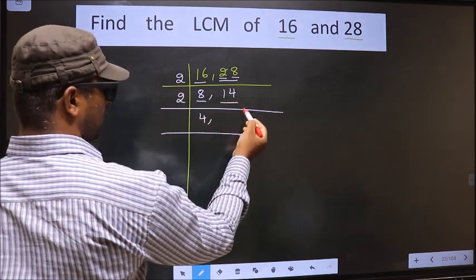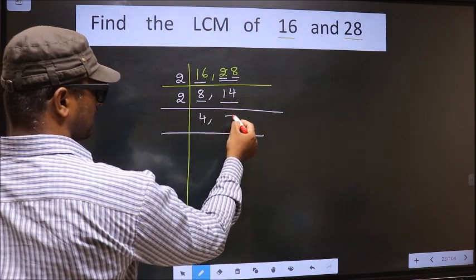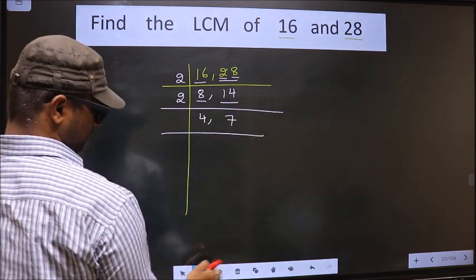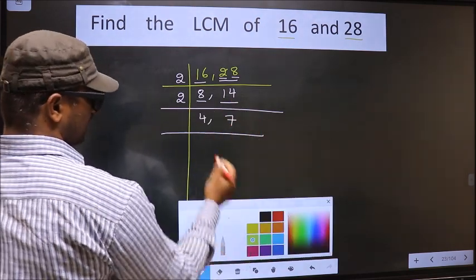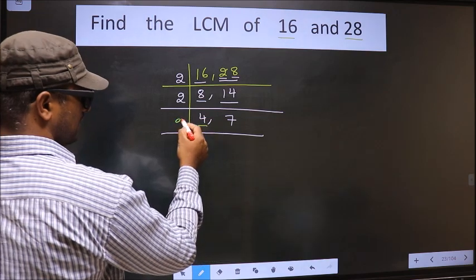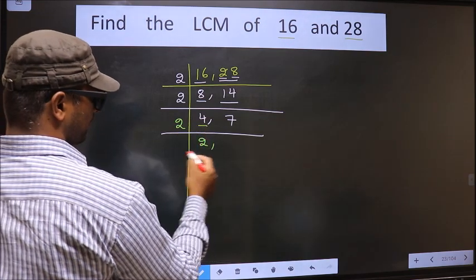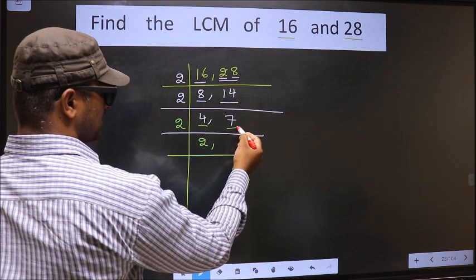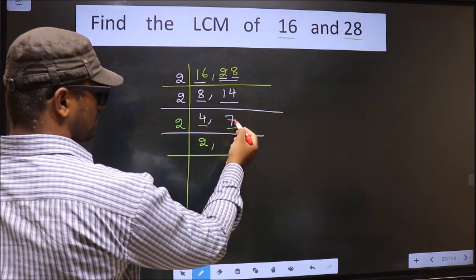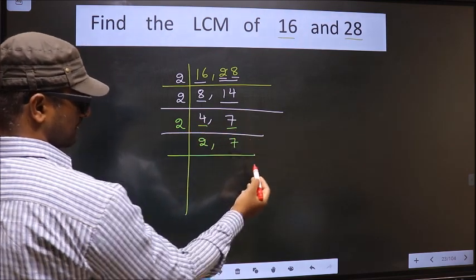The other number is 14. When do we get 14 in the 2 table? 2 times 7 is 14. Now we have 4 here — 2 times 2 is 4. The other number 7 is not divisible by 2, so we write down 7 as it is.